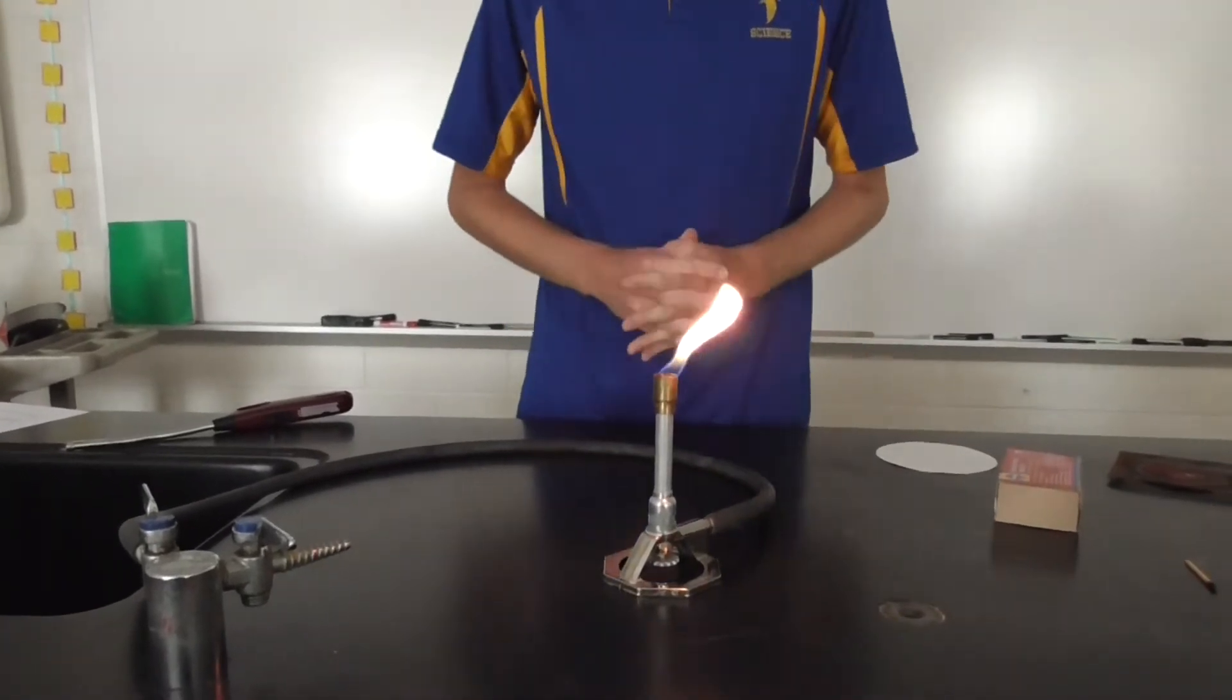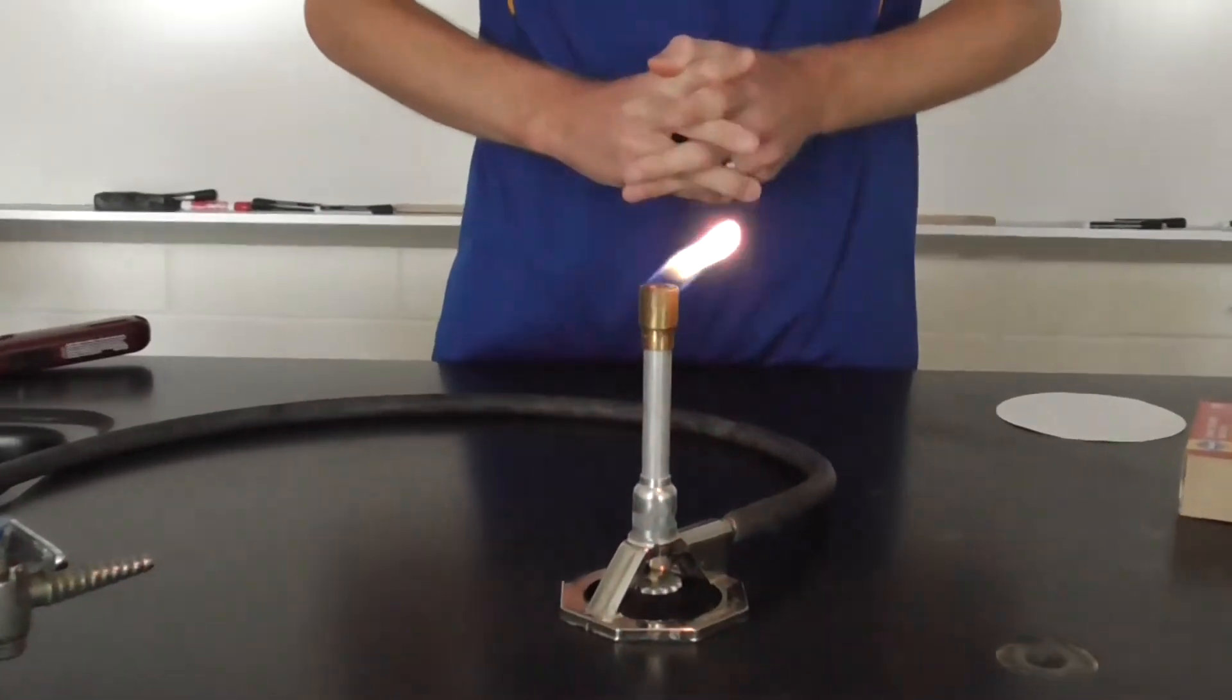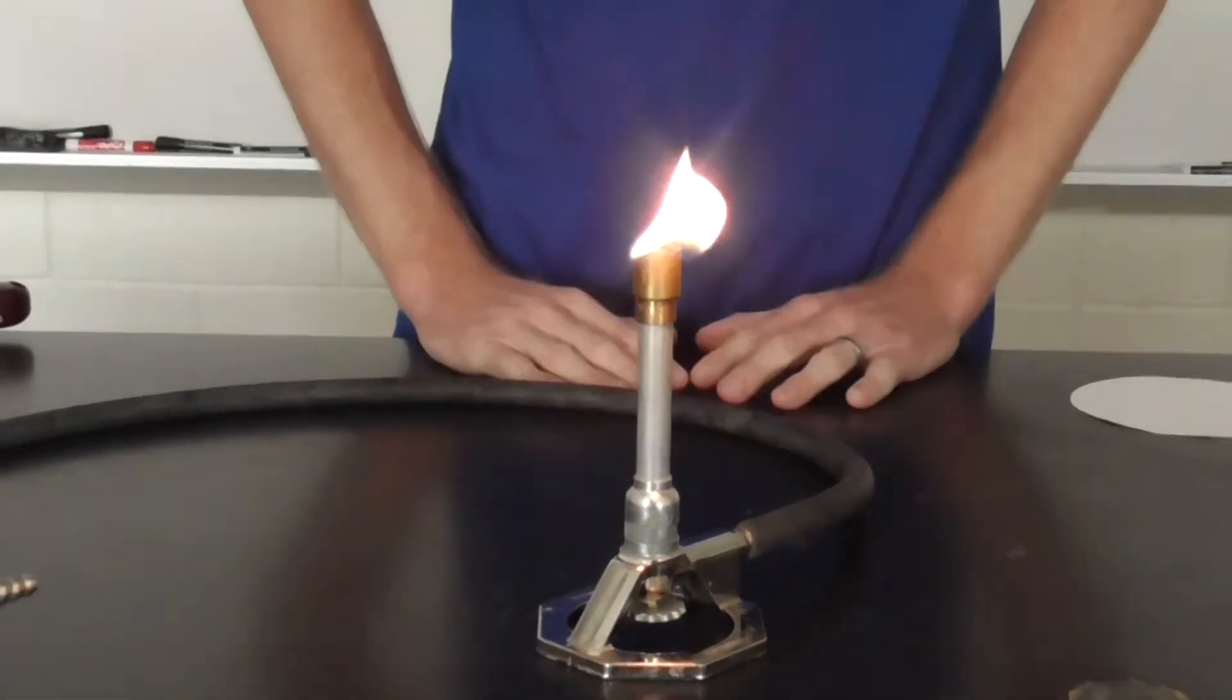Now this is a yellow flame, which is something we're usually not interested in. Usually we want to produce a flame that's blue, that has both an inner cone and an outer cone.